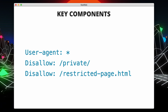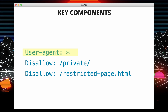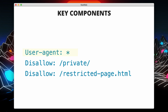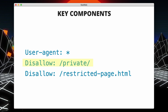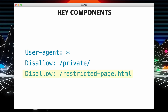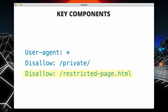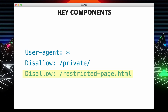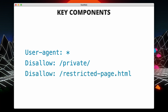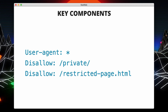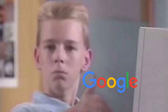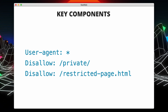In this example we have a user agent specified as a star, which means the rules apply to all web crawlers. The second line tells crawlers not to crawl any pages under a private directory, and the last line instructs crawlers not to crawl a specific restricted page. It's important to note that not all web crawlers follow the rules in robots.txt as it's a voluntary protocol. However, well-behaved search engines like Google typically respect these instructions.